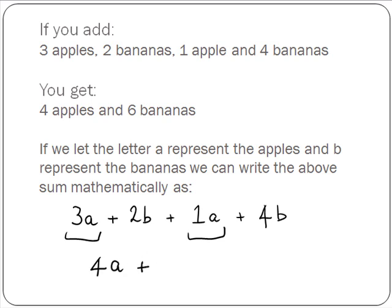And we also have 2B terms. So we've got 2B and 4B. So when we add these we get 6B. So our final answer is 4A plus 6B.